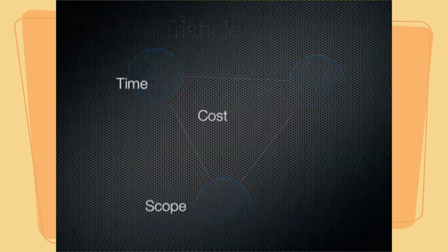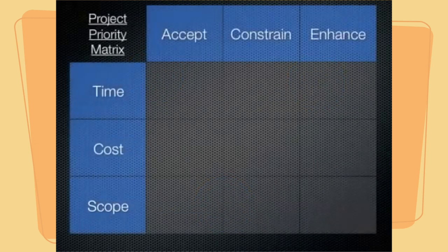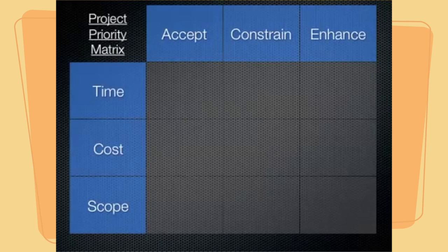In this matrix, we consider these three elements of the project and three ways that we can balance these elements against each other. First, we can either accept changes to one of these three aspects, we can constrain an aspect — meaning it is a priority that this aspect not change — or we can choose to enhance a particular aspect if possible, that is, to make it better.